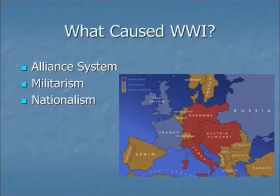Germany was allied with Austria and Italy, and so if any conflict originated between those countries, it would soon spread to these three additional countries and all their colonies. Conversely, there was an alliance between France, Great Britain, and Russia, and if they were attacked, all the other great powers on their side would come to their aid.